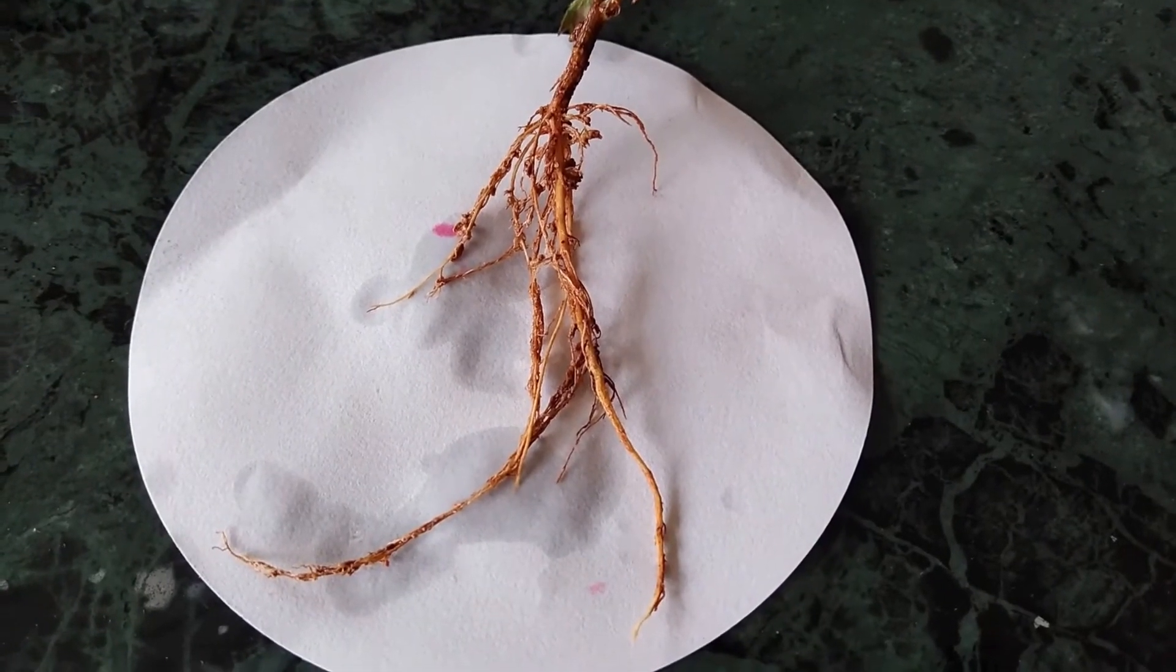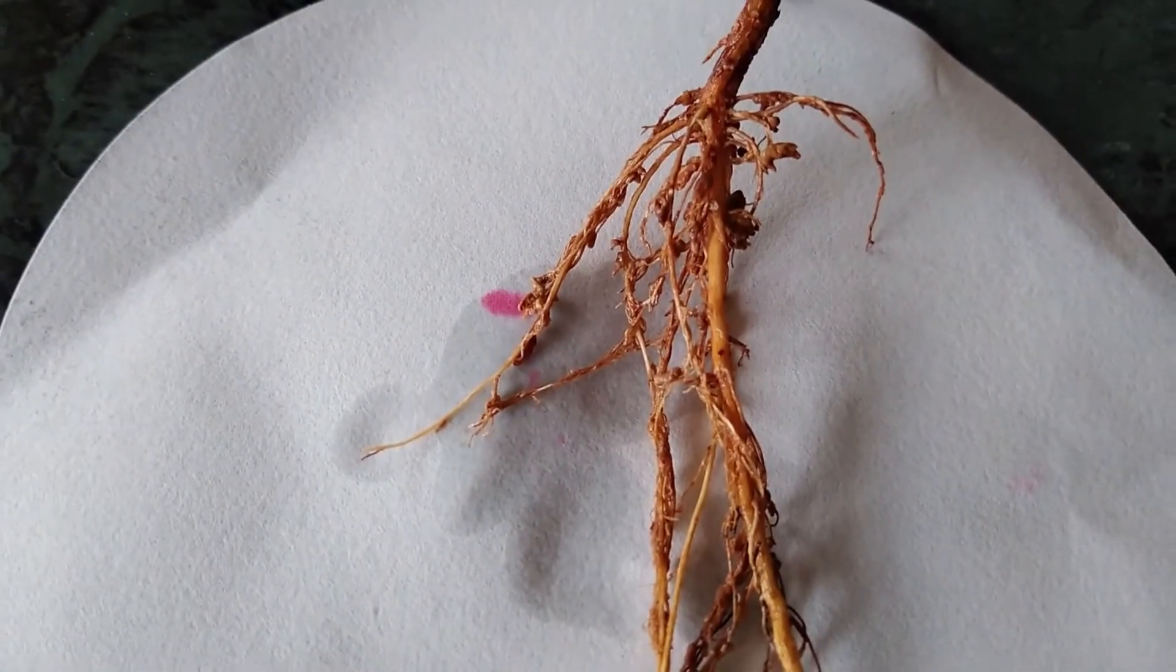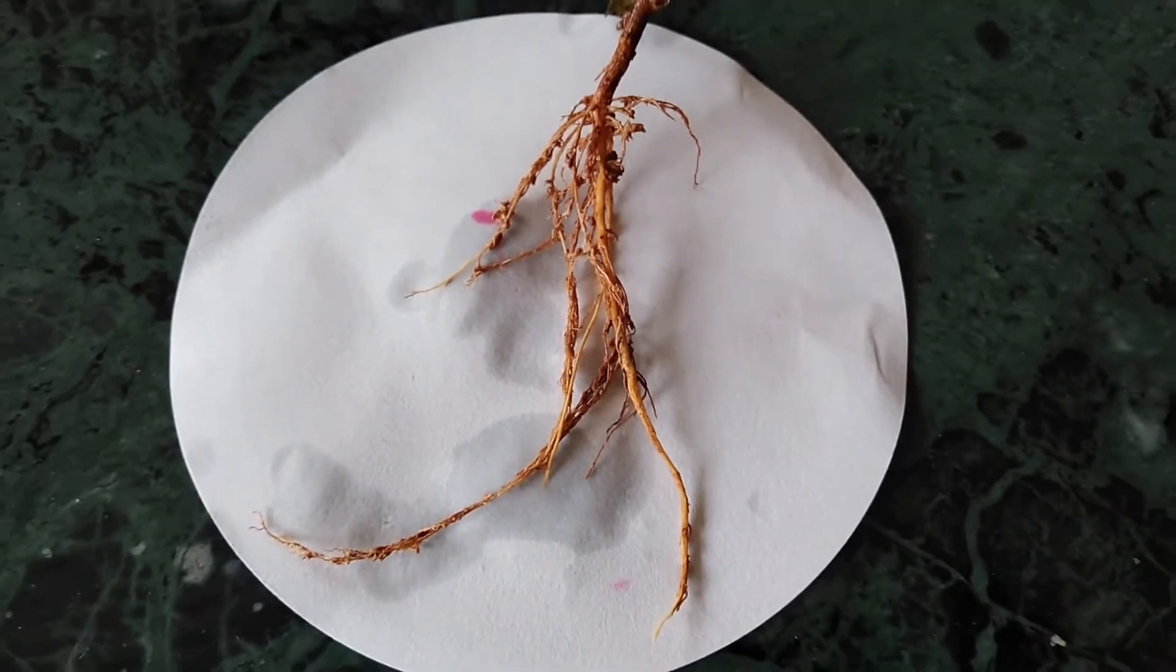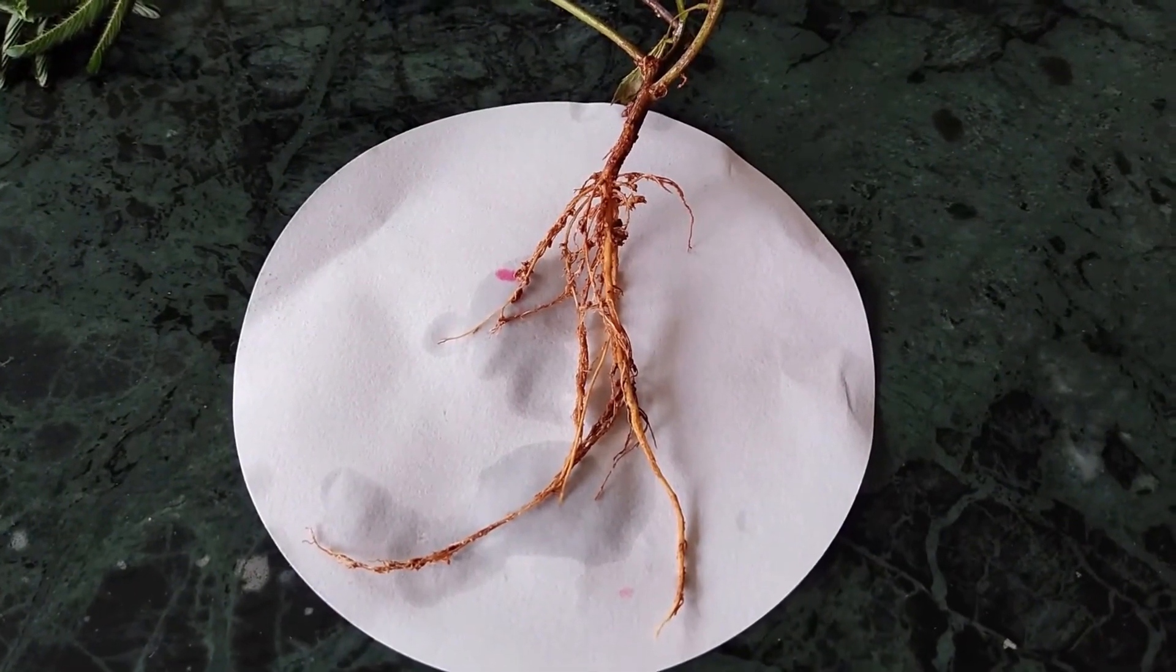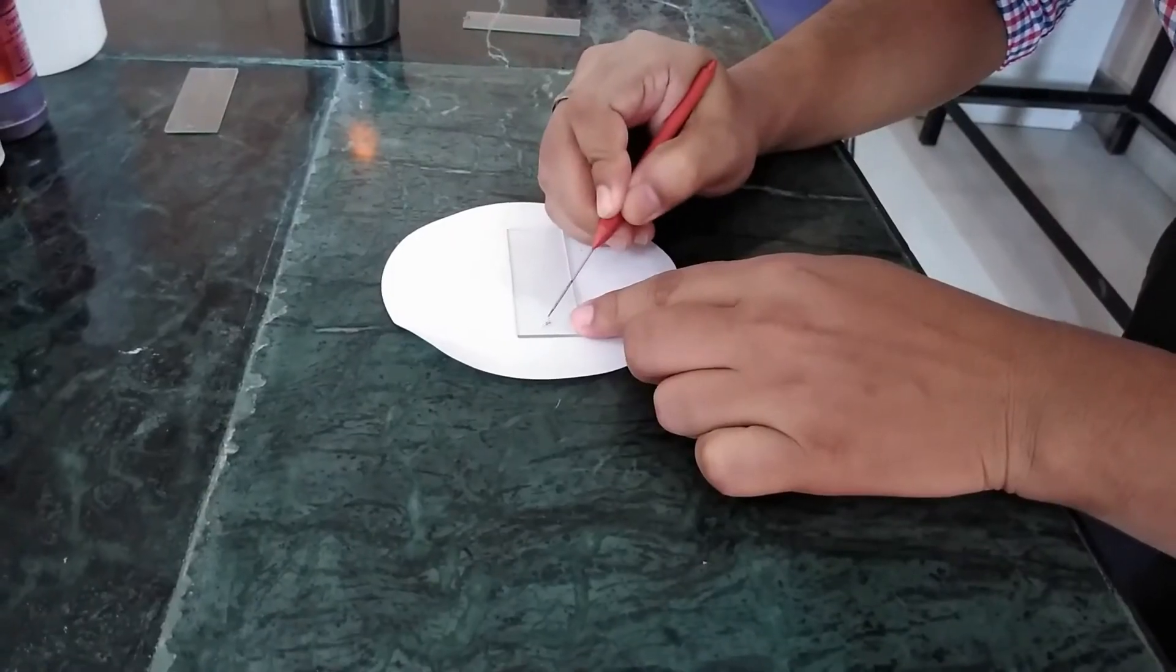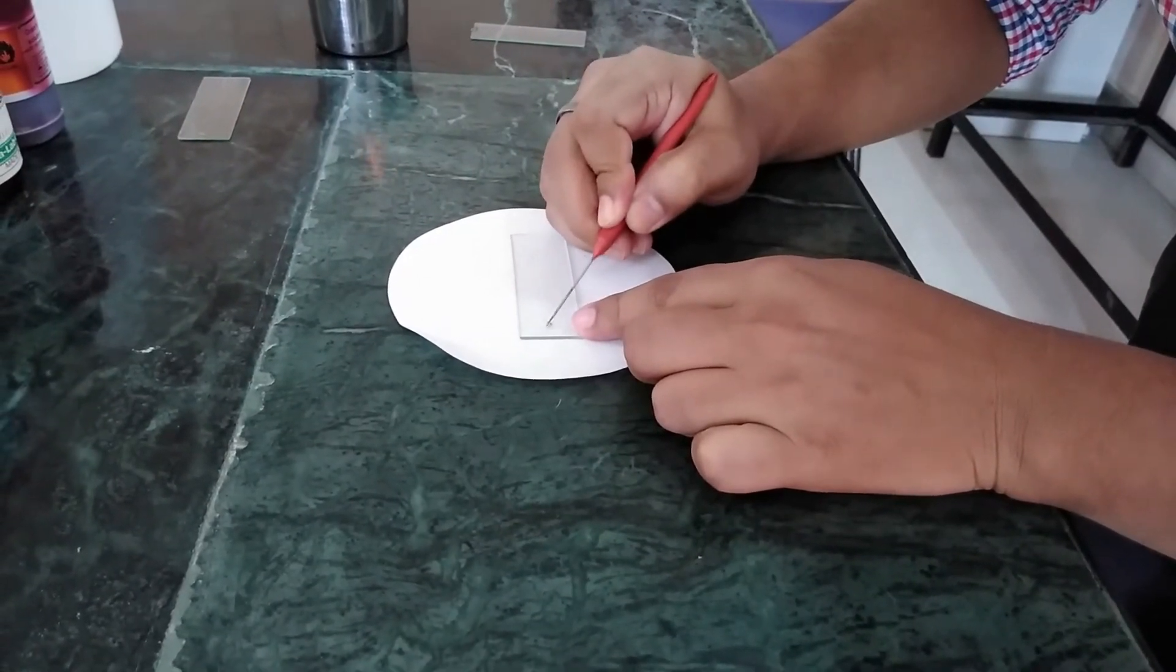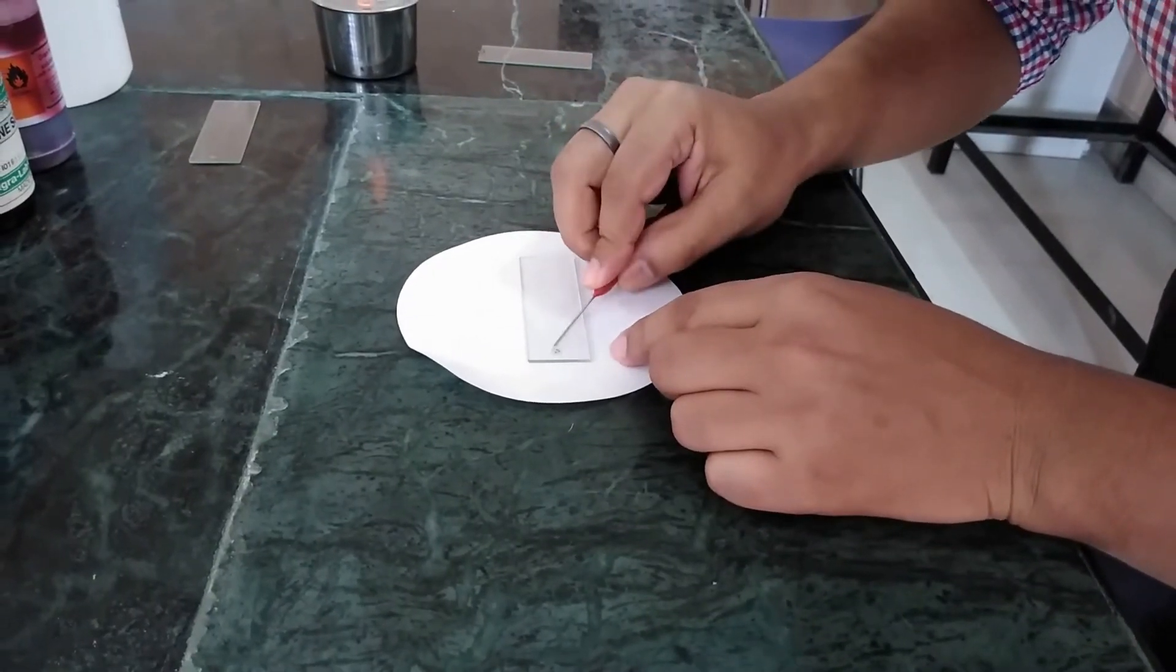Here, root nodules of leguminous crop is used for the study. Then, a small nodule is taken out from the root and placed on the clean glass slide and then crushed properly.